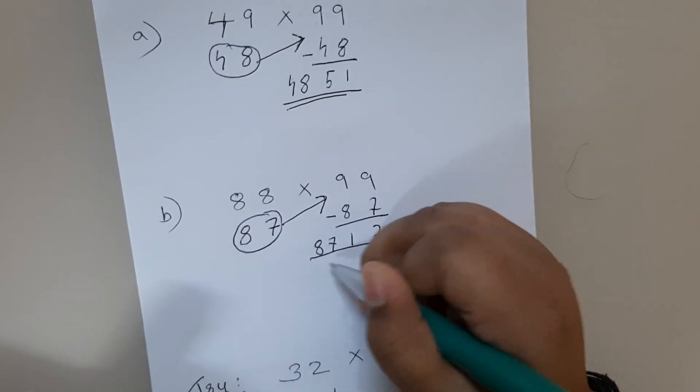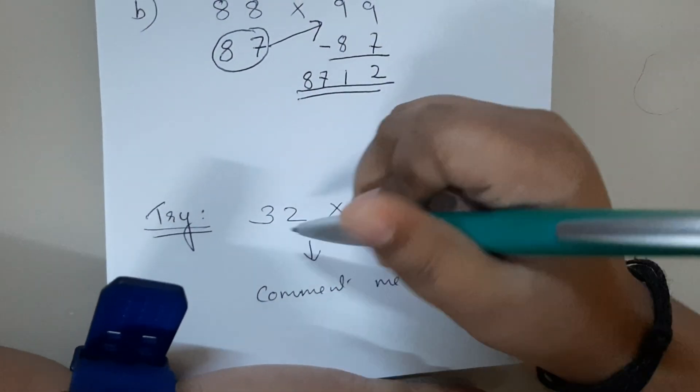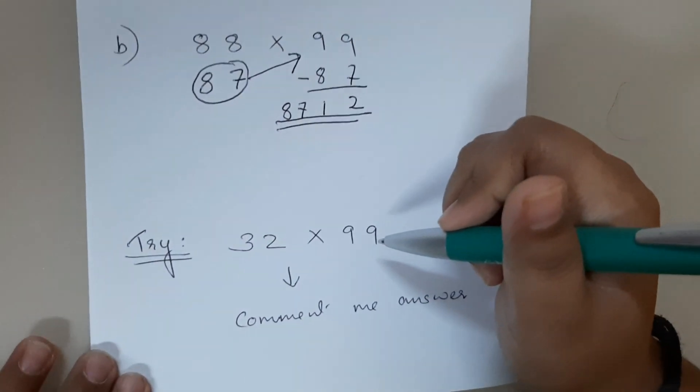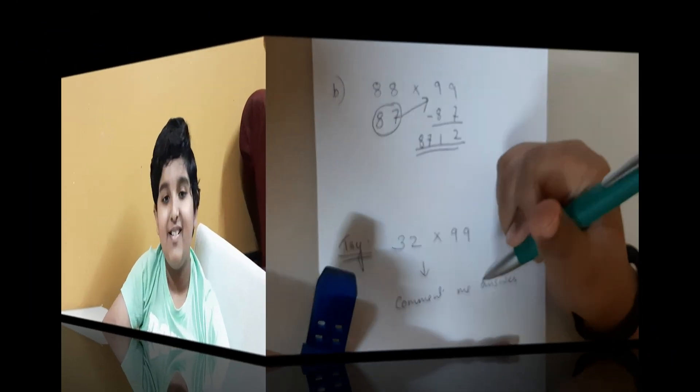Next sum is 32×99. This sum you try and leave the answer in the comment box.